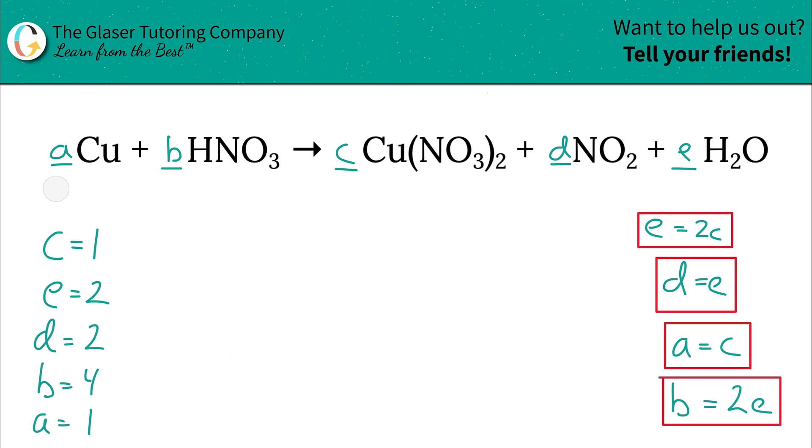So A had to be 1, B had to be 4, C had to be 1, D had to be 2, and E had to be 2. Let's see if this works out. 1 copper and 1 copper. Good.